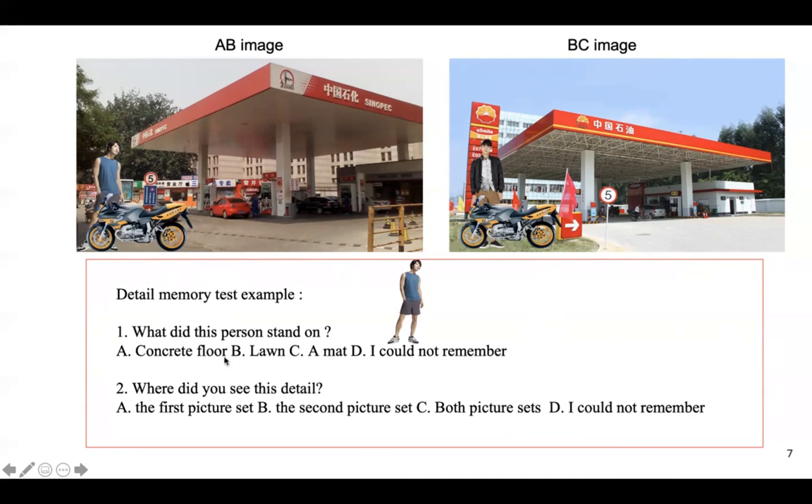The false memory answer is the answer coming from the corresponding BC image, and a made up answer that is a foil answer. And also, we could allow participants to say, I didn't remember. And we also ask participants, where did they see this detail?